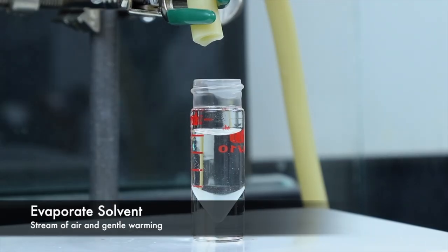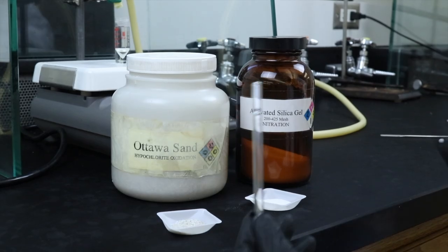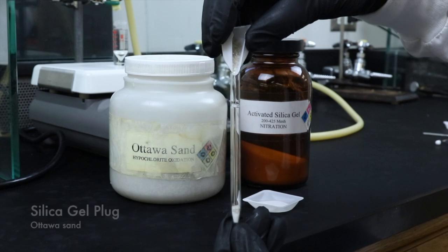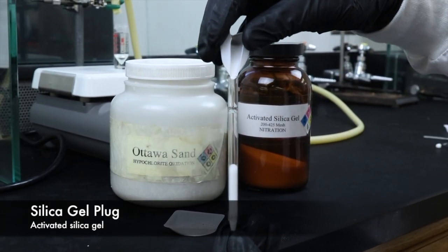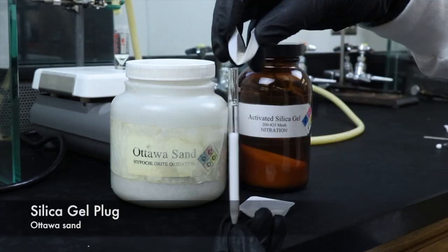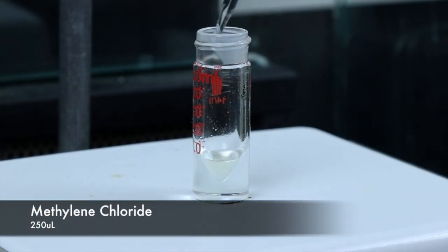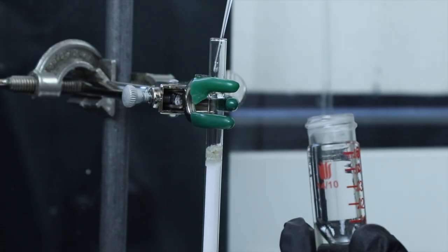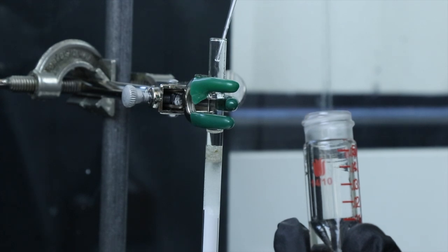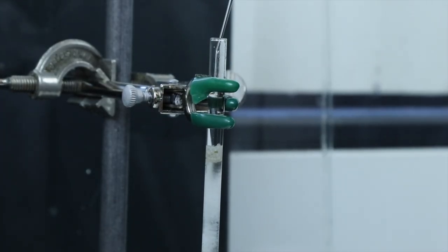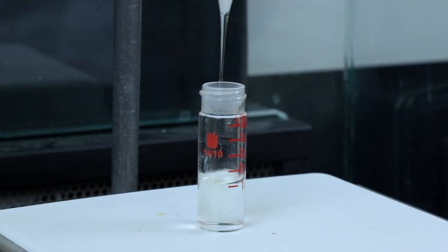Now I can evaporate the solvent with a stream of air and gentle warming, and start setting up the dry silica gel plug. So I'll add a piece of cotton in the bottom at first. Then a little bit of Ottawa sand just to cover the surface area of the pipette. A couple inches of the activated silica gel. And just a little bit more Ottawa sand on top. Once the solvent has been evaporated off, I'll add 250 microliters of methylene chloride, and transfer that solution now to the silica gel plug. I'll be using methylene chloride to elute the plug, and I can use a bulb to help push that through. But I'll be gathering about 5 to 10 milliliters of the methylene chloride solution in a separate conical vial.